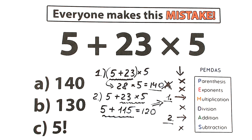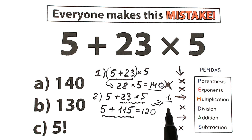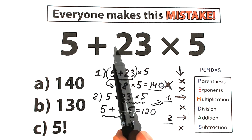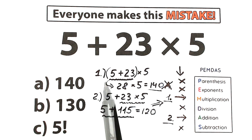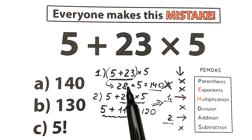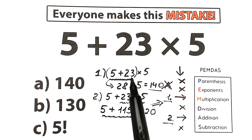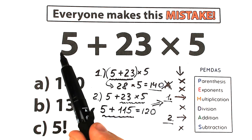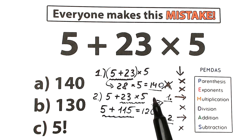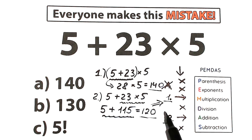The correct solution according to PEMDAS is 120, and every calculator that follows order of operations will confirm this. Don't use a basic calculator that evaluates as you type — those will give you 28 after entering 5 plus 23 and produce the wrong answer. Find a calculator where you can enter the whole expression at once, and it will correctly multiply 23 times 5 first. The correct answer is 120.